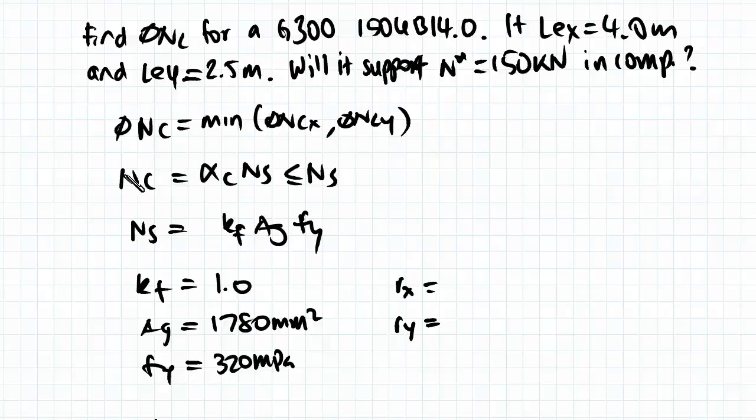Okay, so onto our member capacity. Remember that it's proportional to our section capacity by a factor of αc, which accounts for flexural buckling through slenderness and imperfections. Our section capacity Ns is equal to kf Ag fy when it's nominal.